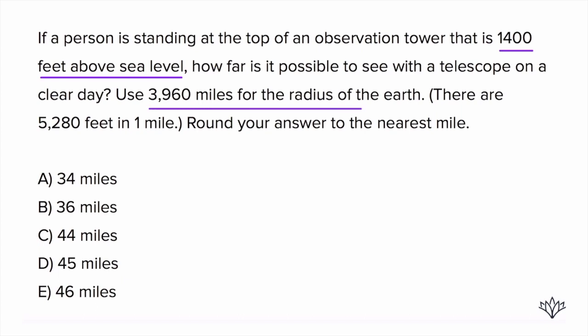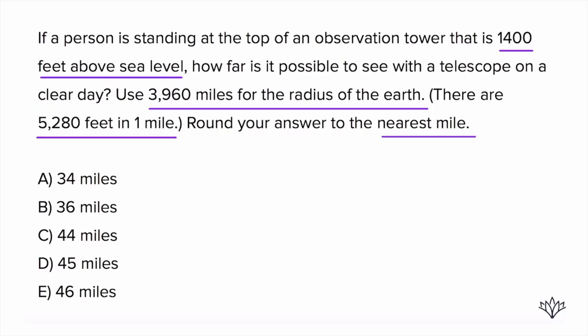Use 3960 miles for the radius of the earth, so we know we probably need the earth here if they're giving us that. It tells us there's 5,280 feet in one mile and asks us to round the answer to the nearest mile. Remember, you do your rounding at the very end. Let's start by creating a diagram.